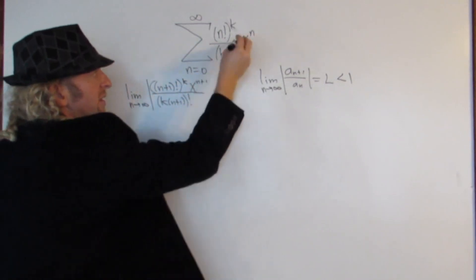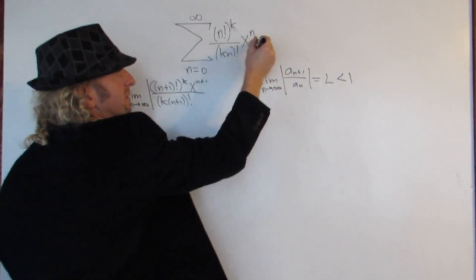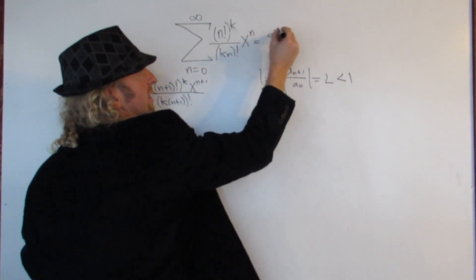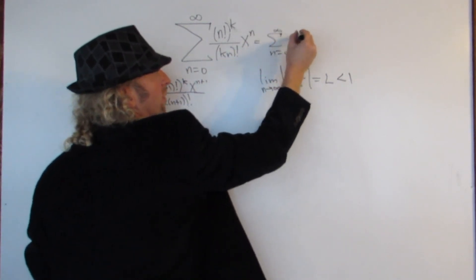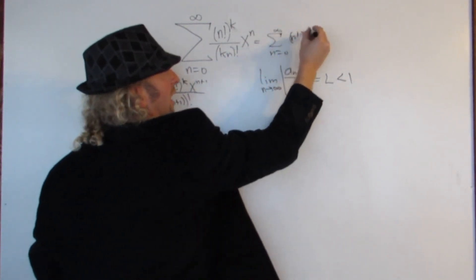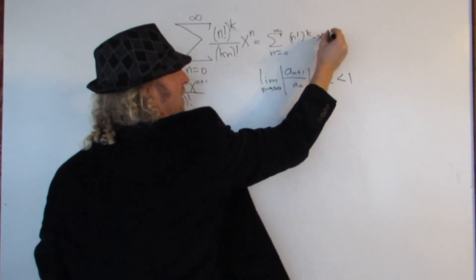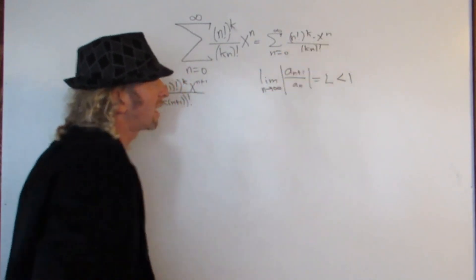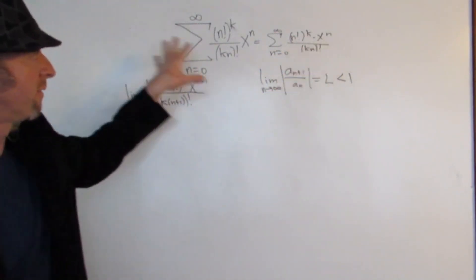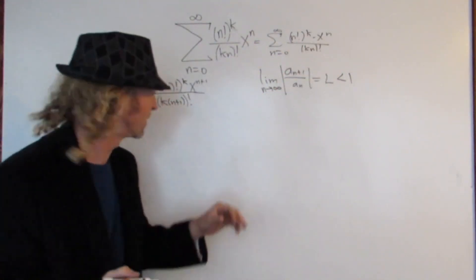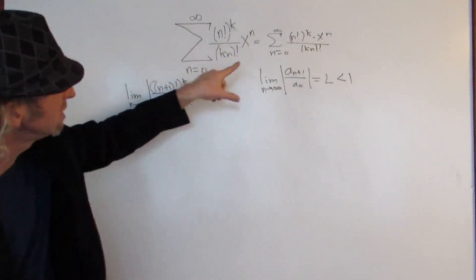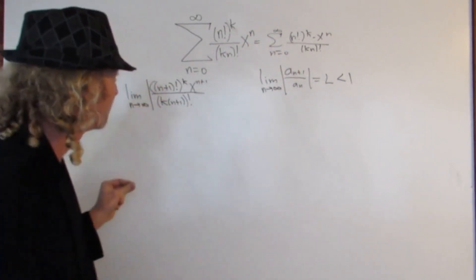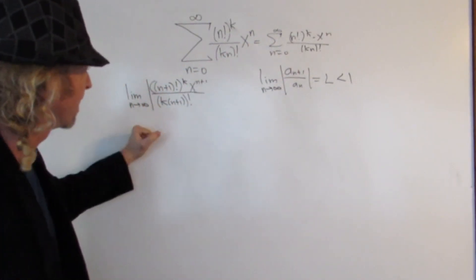You can think of this sum as the infinite sum from n equals 0 to infinity of n factorial to the k times x to the n over kn factorial. That's how you want to think about it for the ratio test. So all we did was replace all of the n's with n plus 1's.